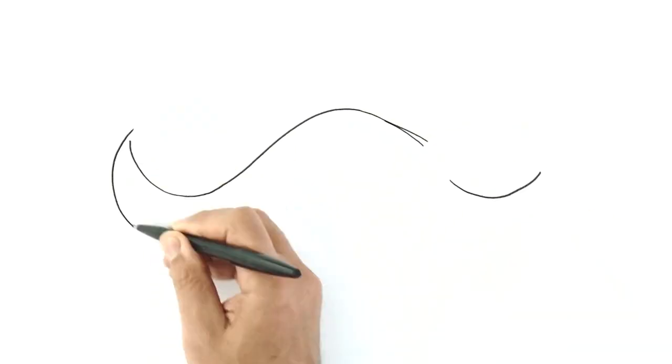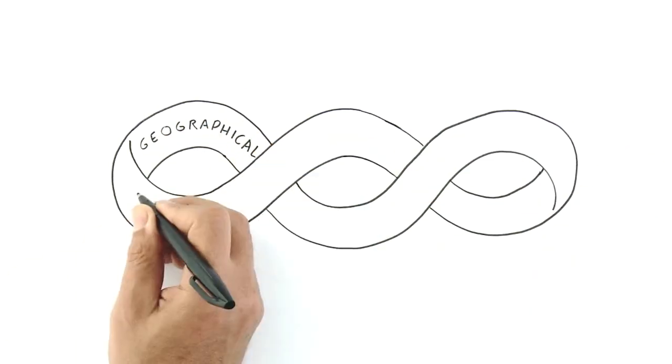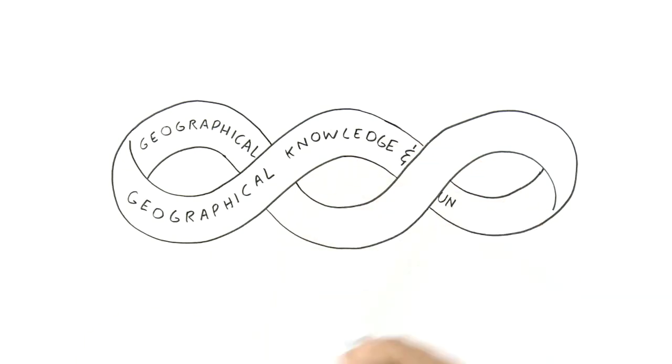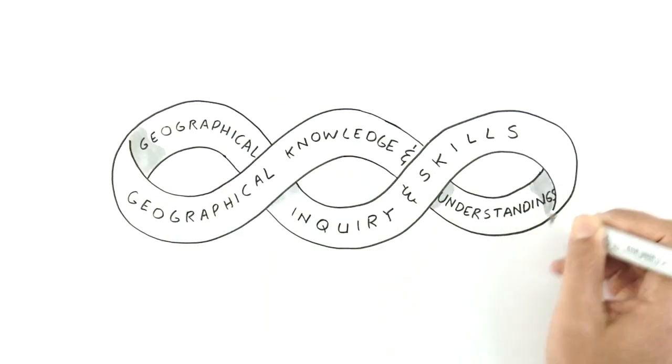When we look at the Australian Curriculum for Geography, we see that there are two interwoven strands: Geographical knowledge and understandings, and geographical inquiry and skills.